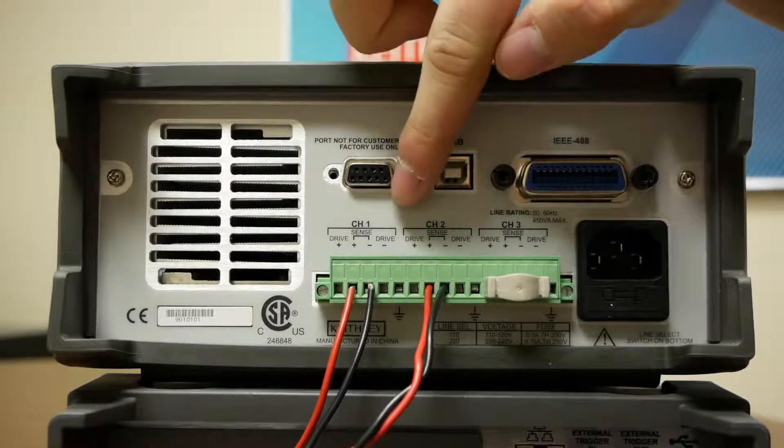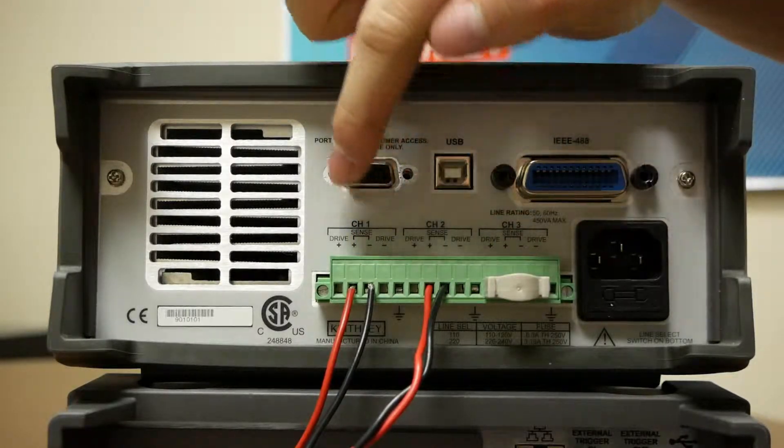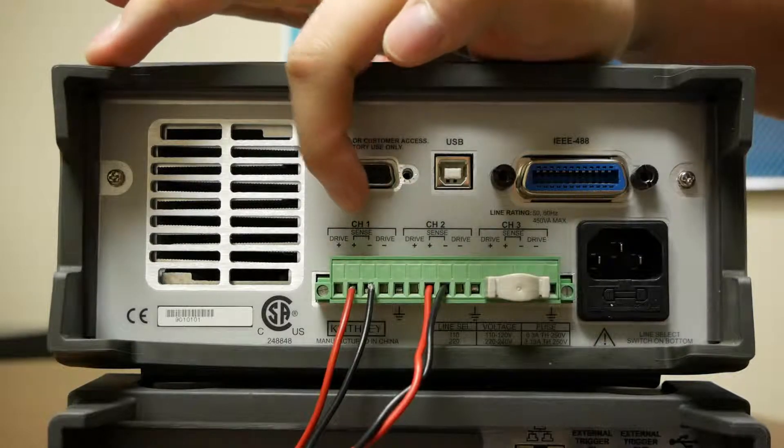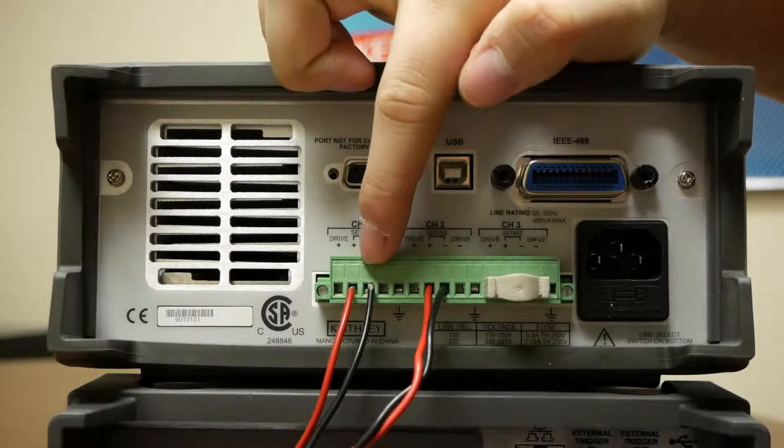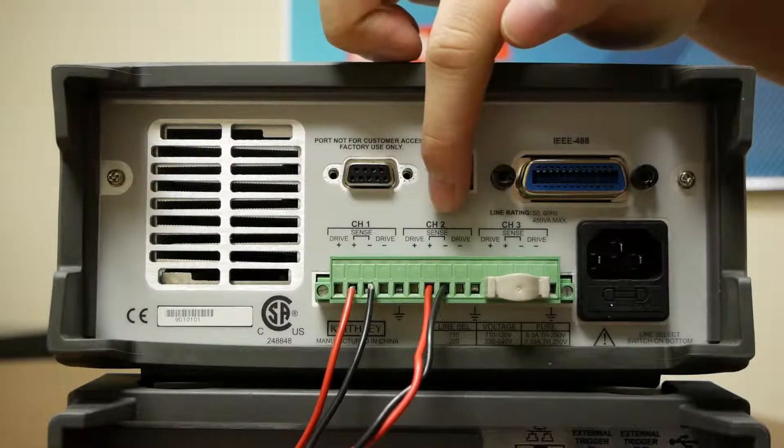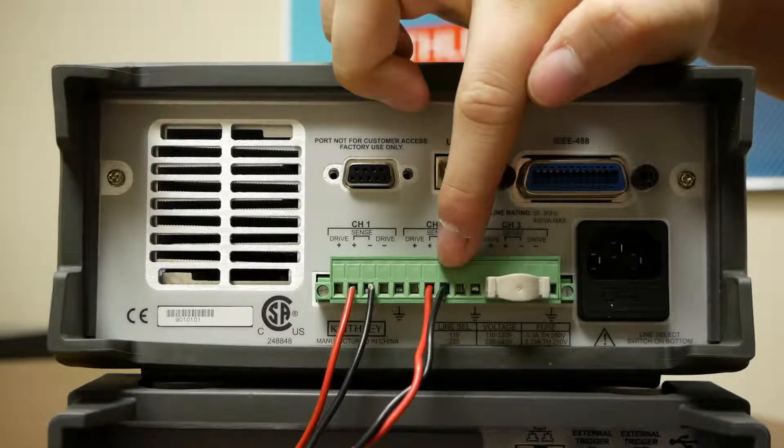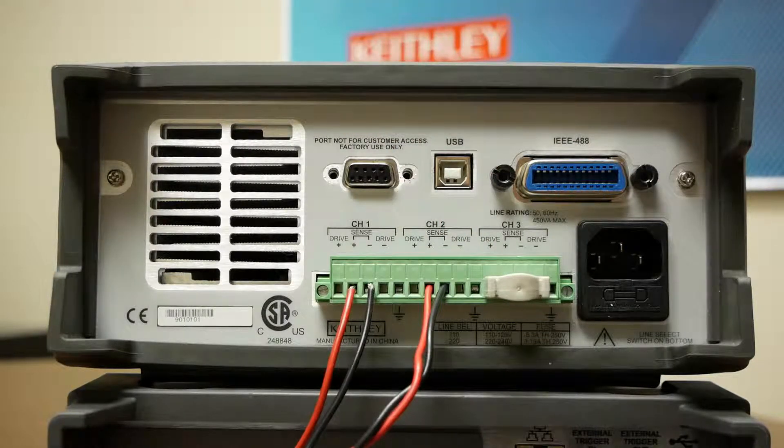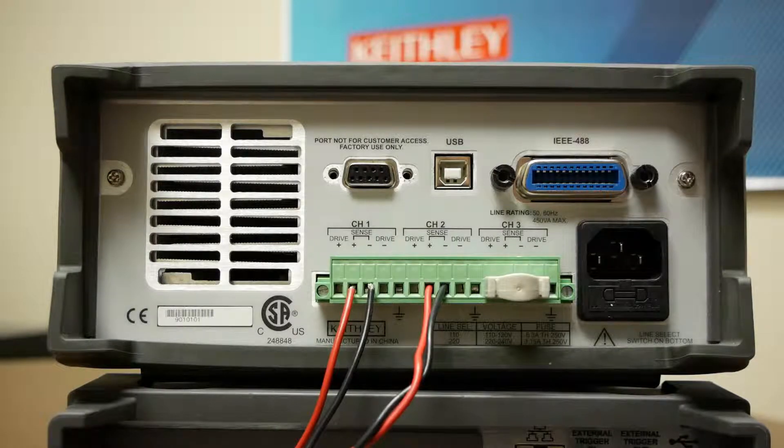our connector is going to line up with our channel configurations and we will connect sense high and sense low on channel 1 here directly out to the DUT and our channel 2 sense high and sense low here directly out to the DUT. This will give us an improved voltage monitor for our test.